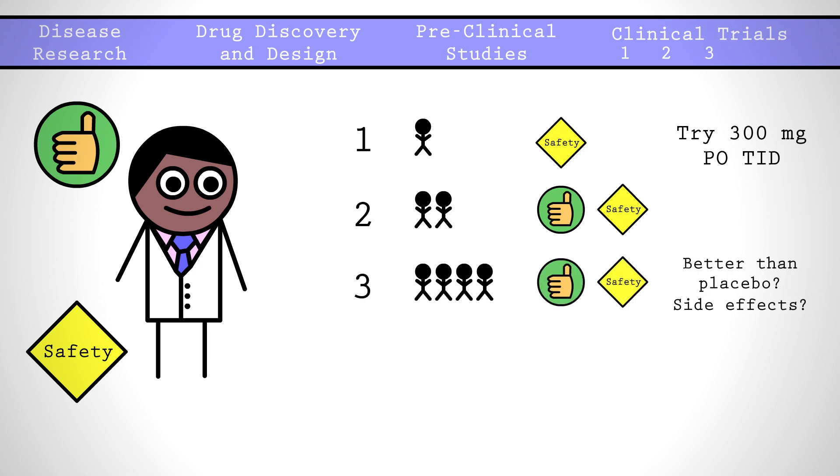Phase 3 bumps up to a few thousand people and is used to confirm the drug's efficacy, often against the placebo or the current standard treatment, and to monitor the drug's side effects.